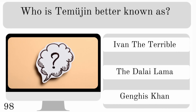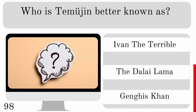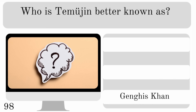Who is Temujin better known as? Ivan the Terrible, the Dalai Lama or Genghis Khan? And the answer — Genghis Khan.